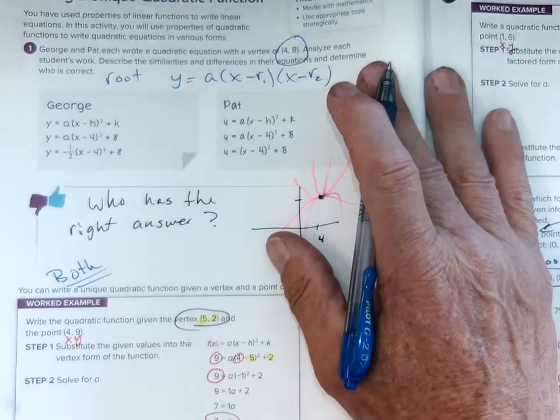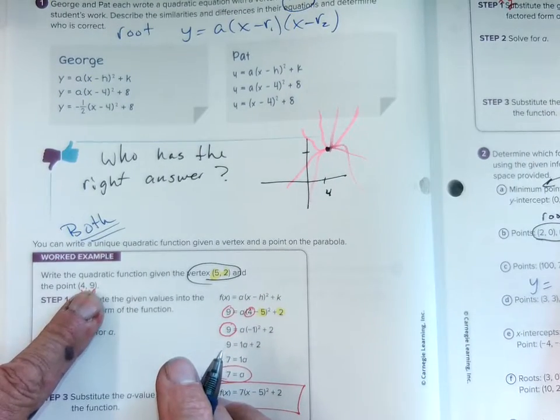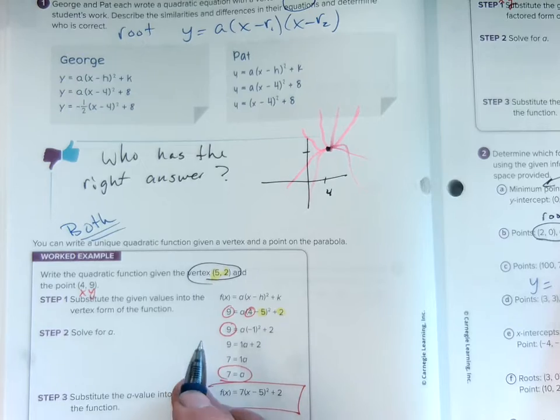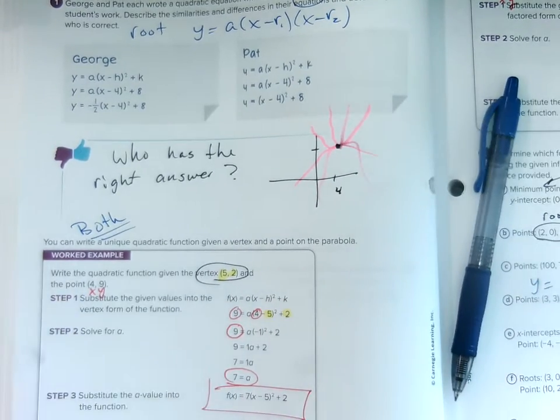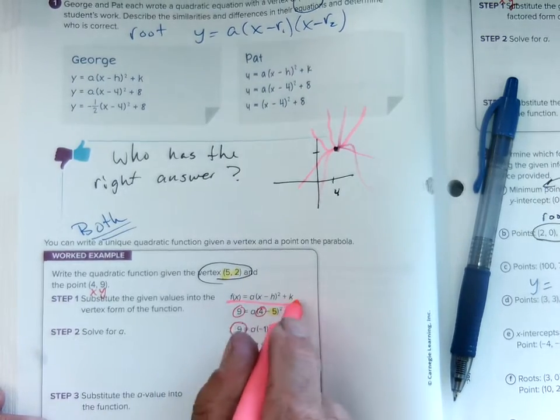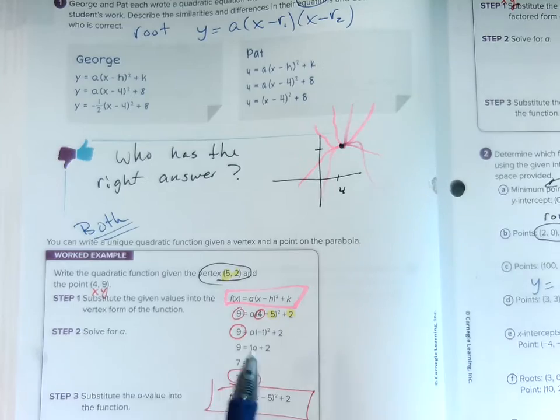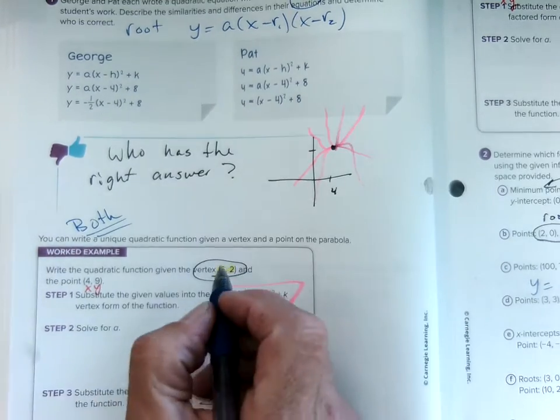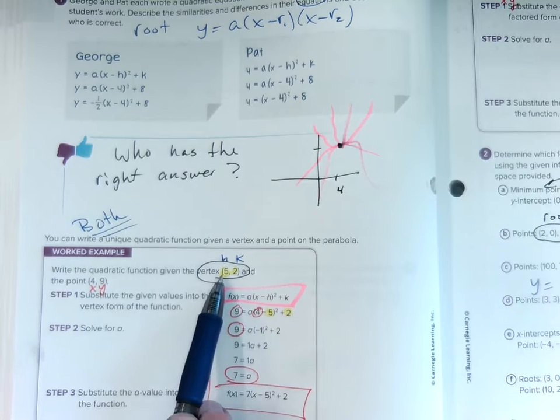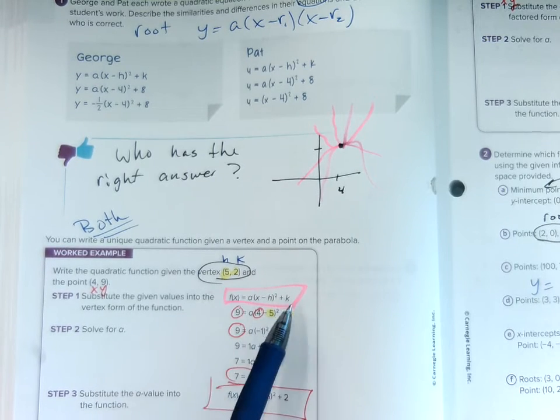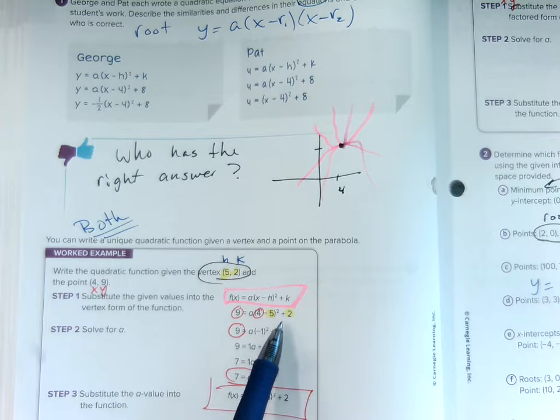So then we looked at this first worked example. And we were given another point. You have to have another point. So we realized we're going to use vertex form. They used vertex form right here. They used f(x) or y equals a times (x minus h) quantity squared plus k. And we know the vertex has an h and a k. Put the 5 in for the h. The 2 for the k. But that wasn't enough. So we need more information to find the value of a.